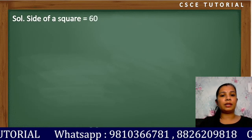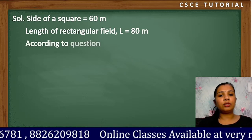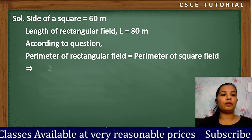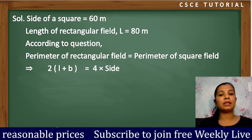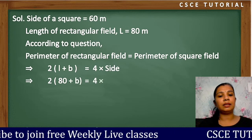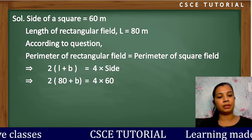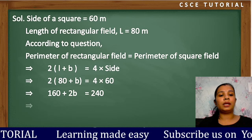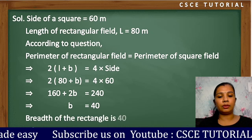First, we will write: side of a square is 60 meters, and the length of the rectangular field is given as 80 meters. According to the question, the perimeter of the rectangular field equals the perimeter of the square field. So we write 2(L + B) = 4 × side. Solving this, the breadth of the rectangle is 40 meters.